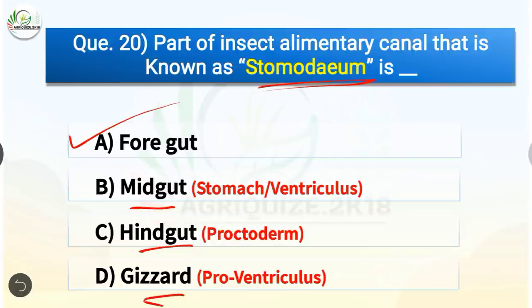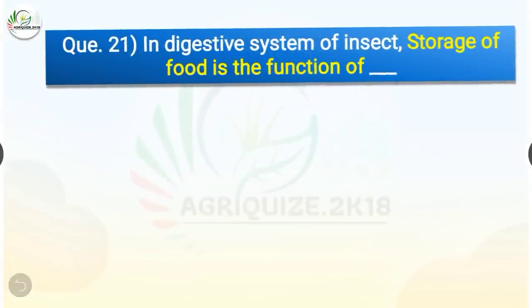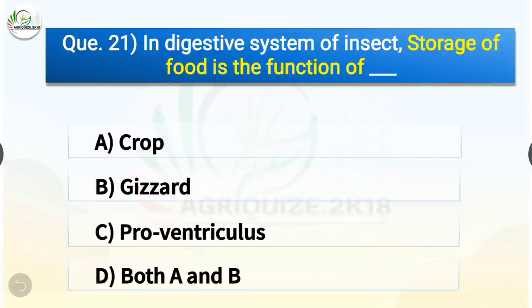Question number 21. In the digestive system of insects, storage of food is the function of which organ? The options are crop, gizzard, proventriculus, or both A and B. The correct answer is option A, crop. In the digestive system of insects, storage of food is the function of the crop.